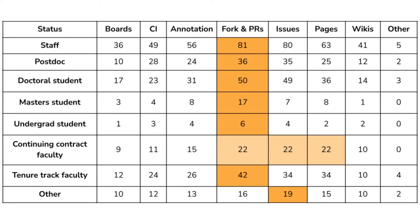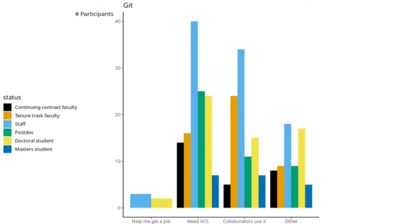This really demonstrates the type of scholarly use and scholarly ephemera created when using Git and Git hosting platforms. In this chart, we see the actual motivations for using Git locally. A lot of staff and doctoral students not yet in a tenured position felt that Git would help them get a job. Overwhelmingly, the core need is for the version control system itself. Collaborators using Git was also an impetus for adoption, along with a slew of other reasons.